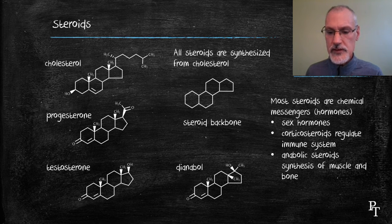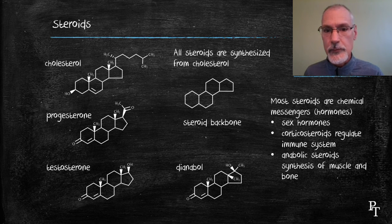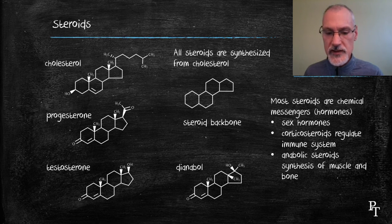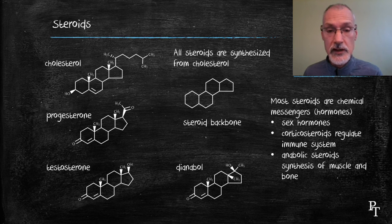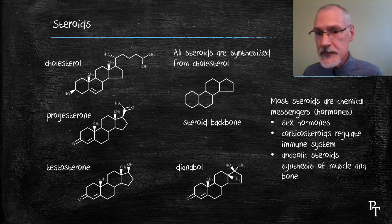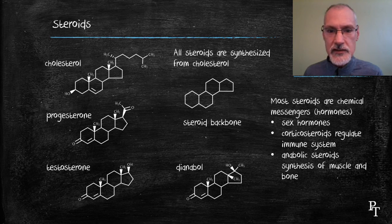Here I have a picture of a molecule called dianabol. This particular substance was found in the bloodstream of Ben Johnson shortly after he won the Olympic gold medal for Canada. You can see the tremendous similarity between this molecule and testosterone, which associates it with the muscle buildup he gained from taking that drug. If you have questions, please don't hesitate to post, and thanks for watching.